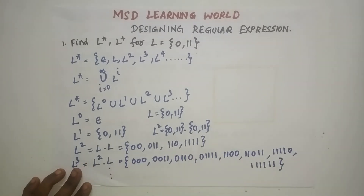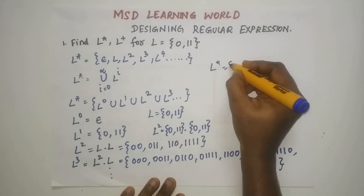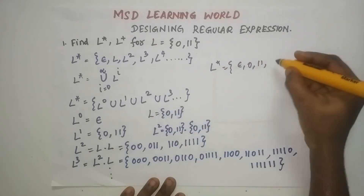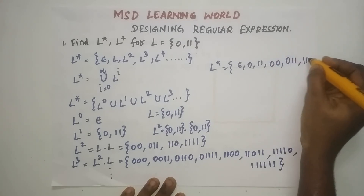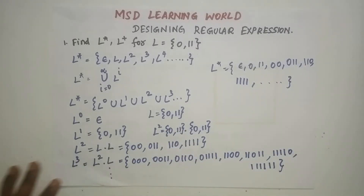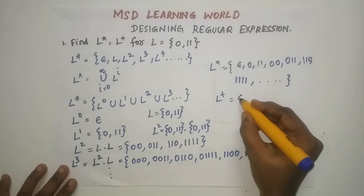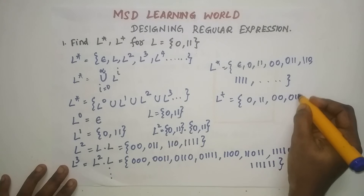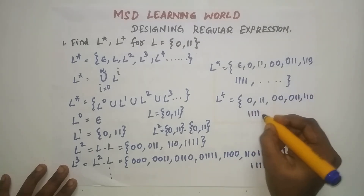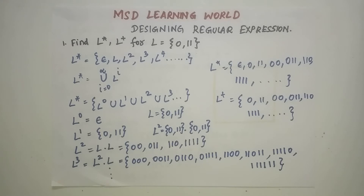So L* is nothing but ε, {0, 11}, {00, 011, 110, 1111}, and so on — you can just write all the languages. This is how you find L*. And L+ is nothing but the same language without ε: {0, 11}, {00, 011, 110}, and so on. This is how you find the clean closure and the positive closure of any given language, using epsilon, closure properties, and the concatenation operation.